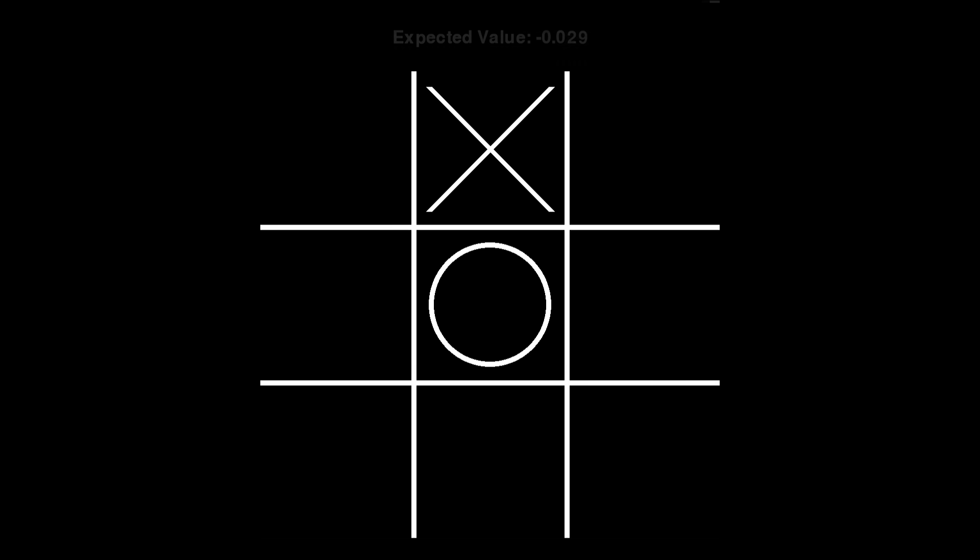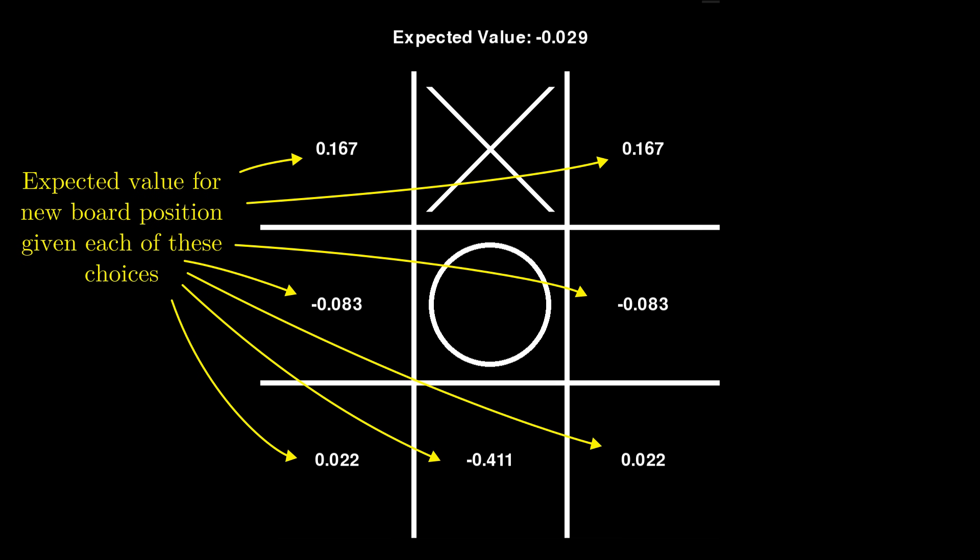Anyway, now that we have a way of evaluating board positions, all we have to do to play as badly as possible is select the move that results in the best possible board position for the other player, which is to say the move that gives them the most paths to victory and us the fewest.